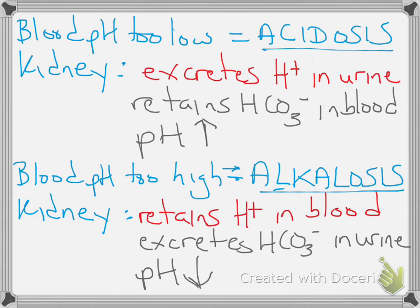If the blood pH is too low, this can result in a condition called acidosis. This often happens with people with lung issues — my dad had pretty advanced emphysema and couldn't get rid of carbon dioxide efficiently, so it remained in his blood and caused the pH to lower. The kidneys can help compensate: you excrete hydrogen ions in the urine so they no longer lower the pH, and you retain bicarbonate ions in the blood, which causes the pH to go up.